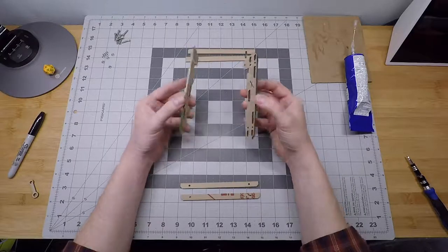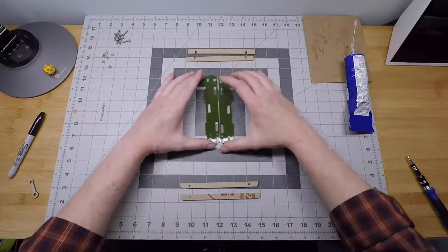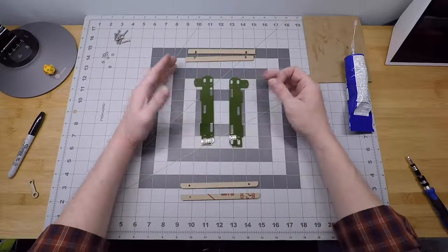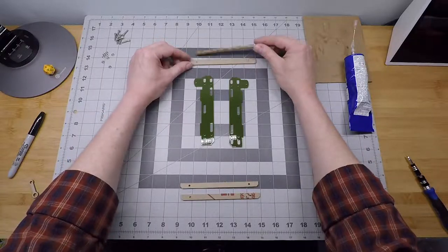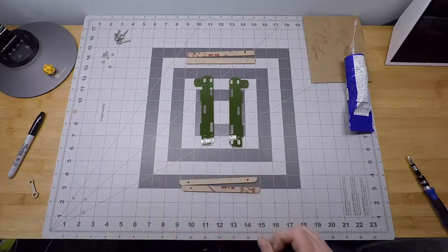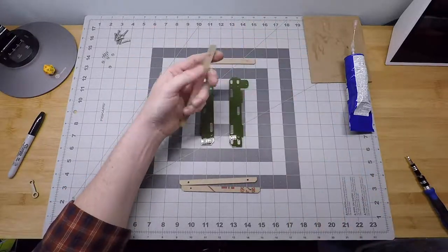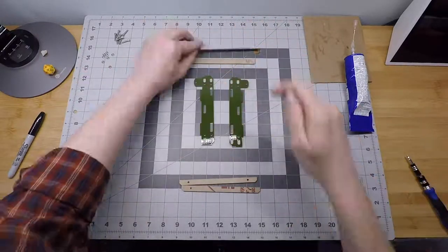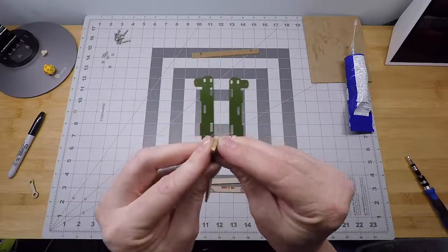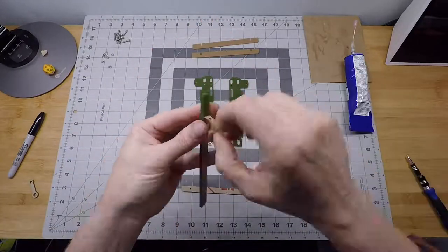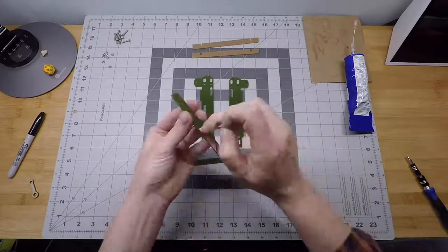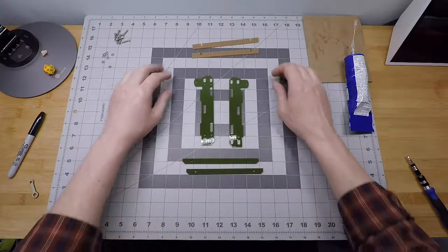Alright, so now that we've peeled these in a special way so that we can keep track of our matched pair, we want to peel both sides of the rail uppers and the rail lowers. So, get to peelin'. Alright, everything's peeled.